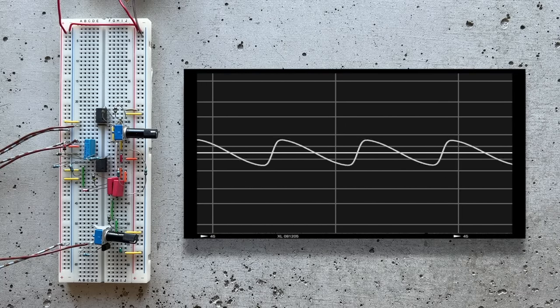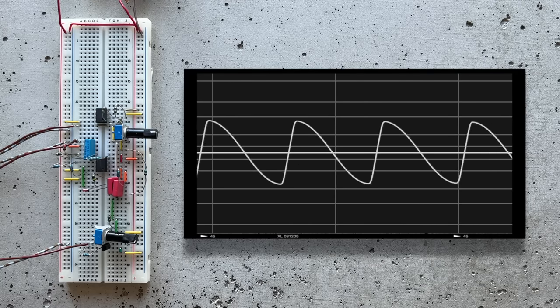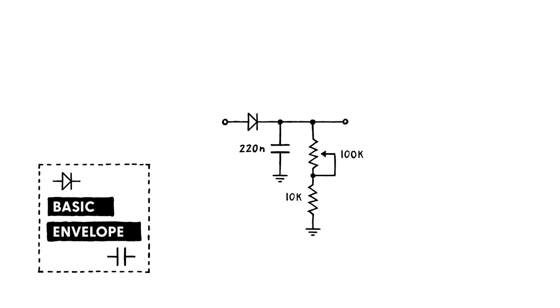So now that we're able to control the kick's pitch with a voltage, we can give it a quick punchy envelope. For that, we'll set up a really basic envelope generator. It works like this. If we apply our trigger to the input diode, current will flow into the 220nF capacitor, instantly filling it up. Then, when the voltage pulse disappears, the charge inside the cap will drain out via the resistance to ground. At the output node, this will result in a gradually falling voltage curve, with its steepness depending on the resistance we dial in using the potentiometer. Great.